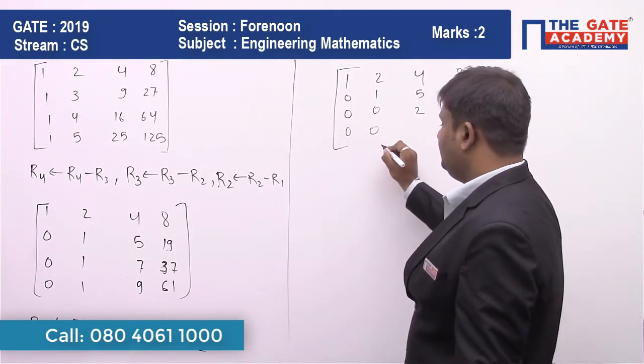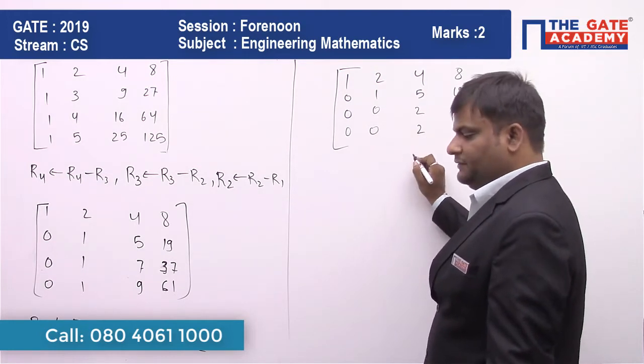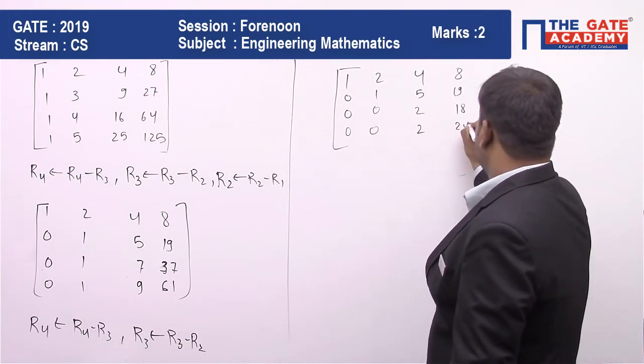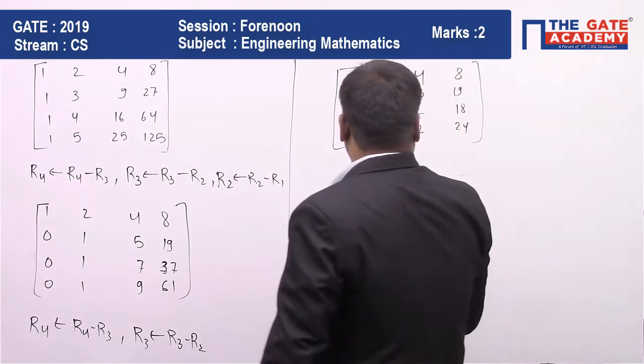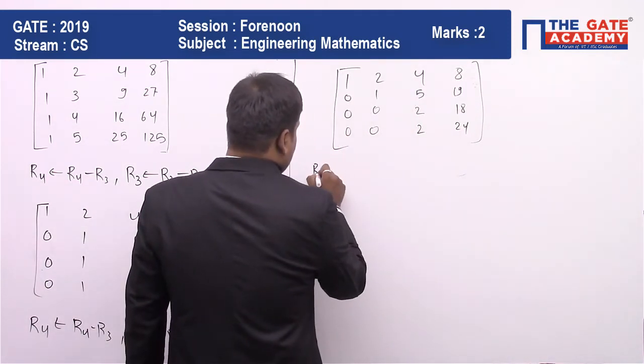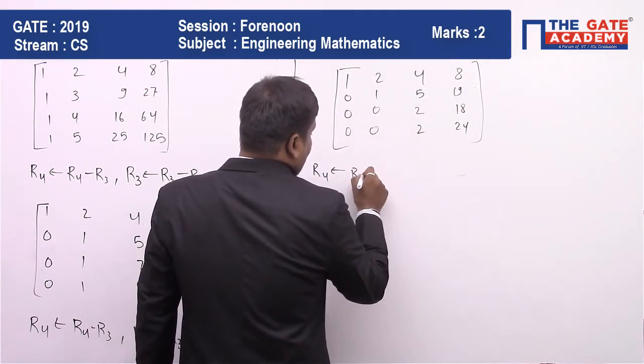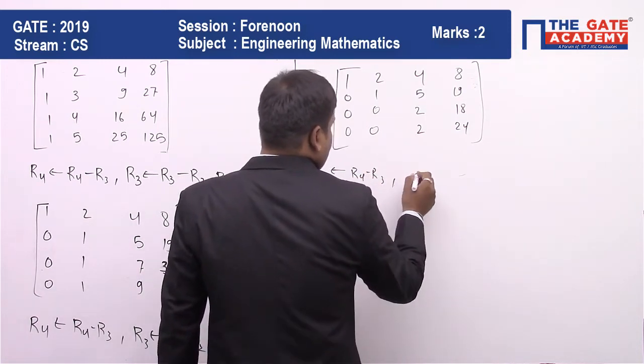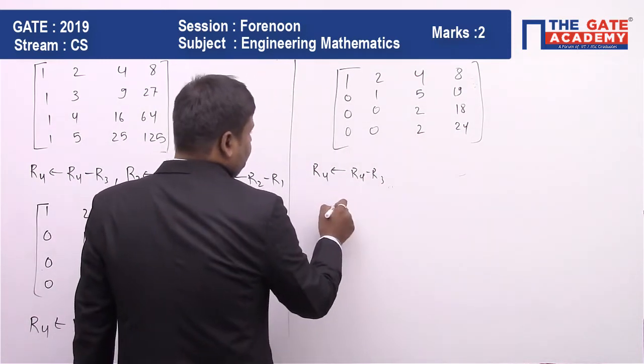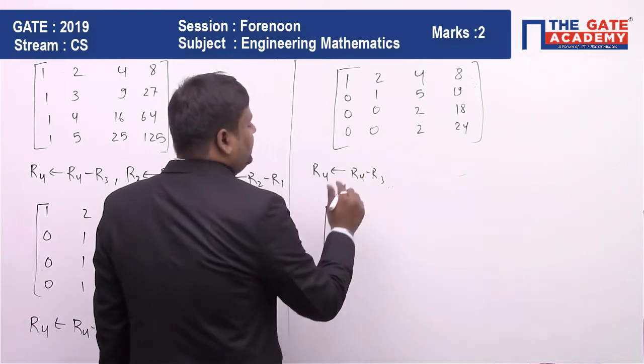The fourth row becomes 0, 0, 2, 24. To further solve it, we perform R4 minus R3. This operation we have to perform.